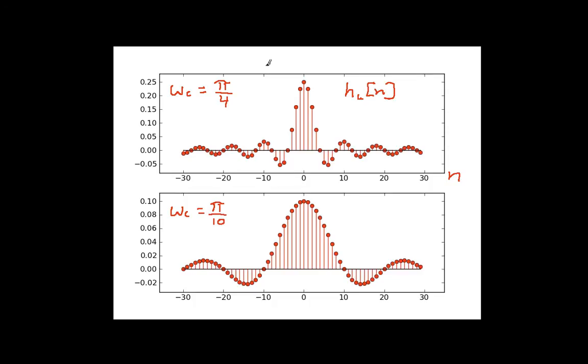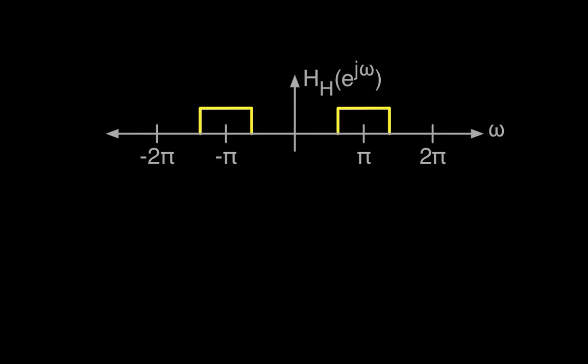So that is getting the impulse response for a low-pass filter from its frequency response, which is the Fourier transform of its impulse response. Now suppose that I also want to have the impulse response of a high-pass filter.